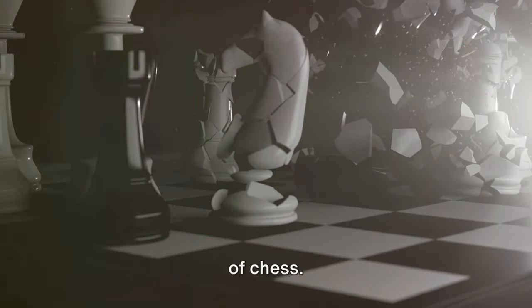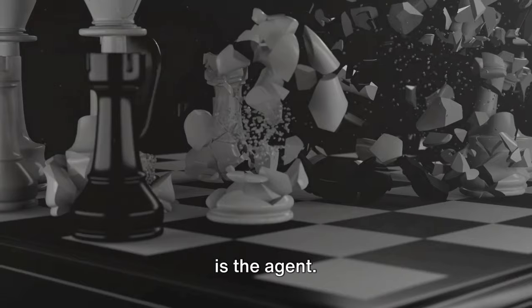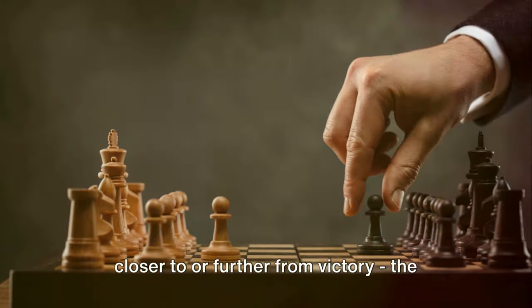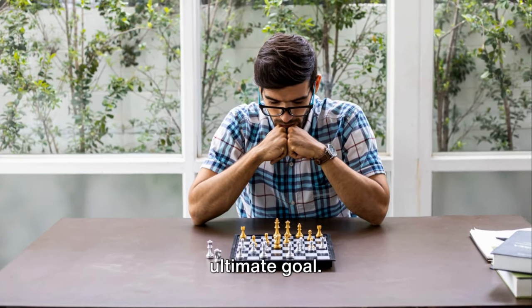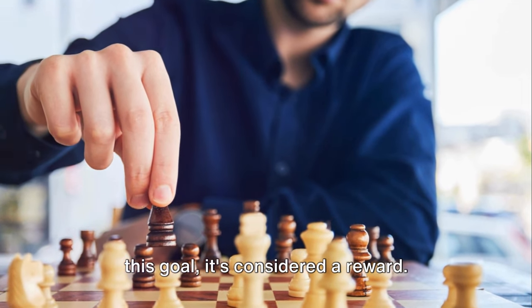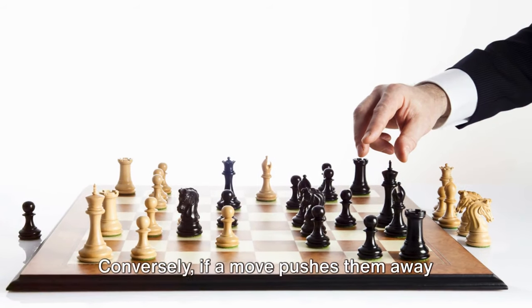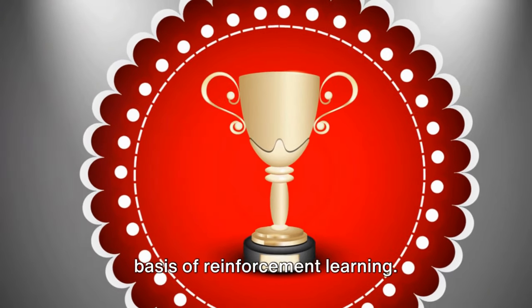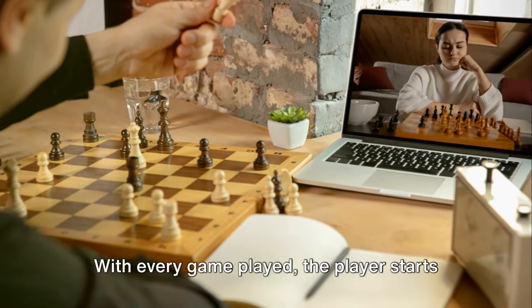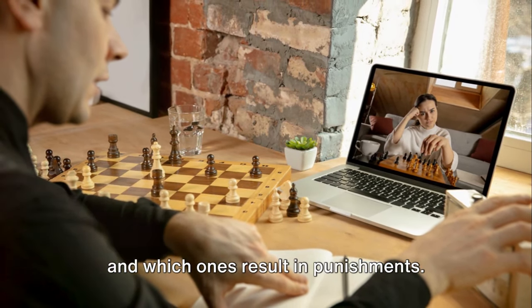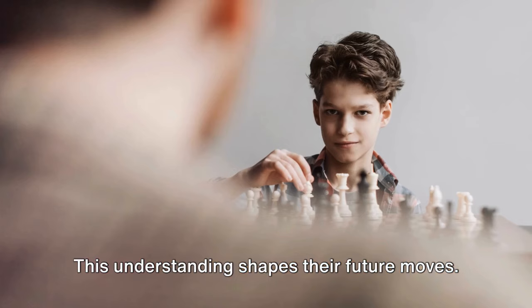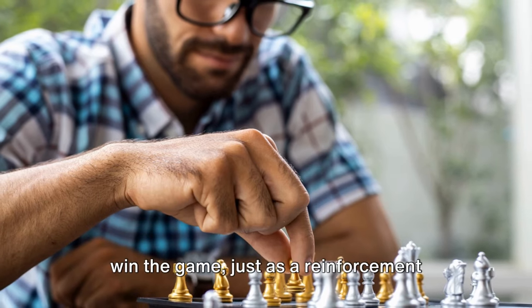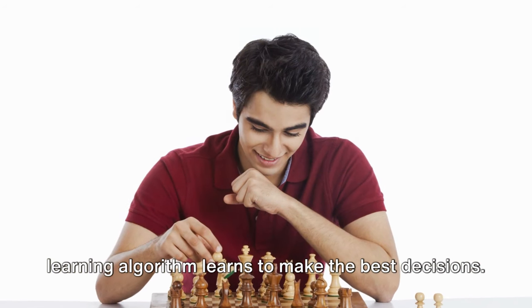To understand it better, picture a game of chess. The board is the environment, the player is the agent. Every move the player makes alters the state of the game, bringing the player closer to or further from victory, the ultimate goal. If a move advances the player towards this goal, it's considered a reward. Conversely, if a move pushes them away from victory, it's seen as a punishment. This reward-punishment system forms the basis of reinforcement learning. With every game played, the player starts to understand which moves lead to rewards and which ones result in punishments. This understanding shapes their future moves. Through this process of trial and error, the player learns the best strategies to win the game, just as a reinforcement learning algorithm learns to make the best decisions.